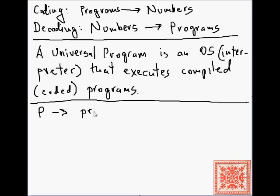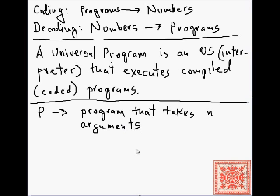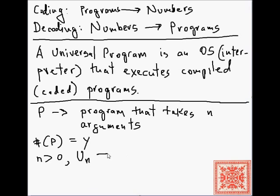Let's say we have a program P that takes n arguments, where n is greater than zero. Let's say that program P is coded or compiled into a natural number y. For n greater than zero, the universal program U_n is a program that can execute any program P of n arguments on its inputs.